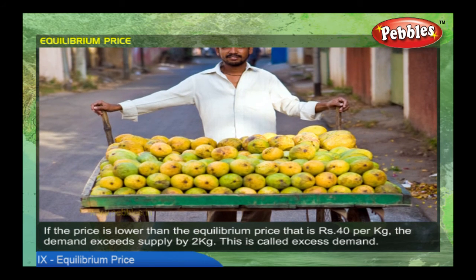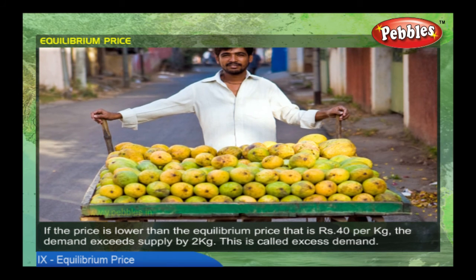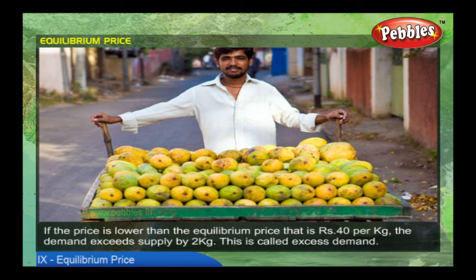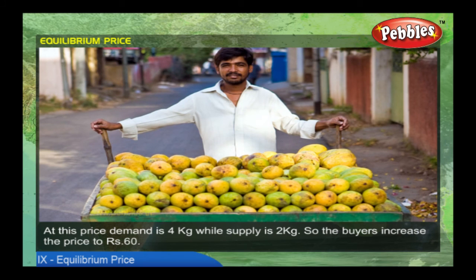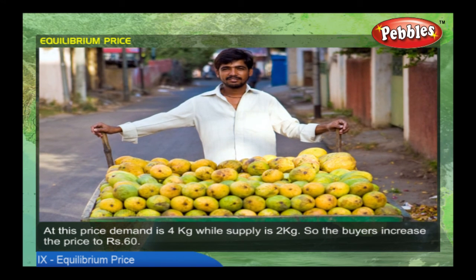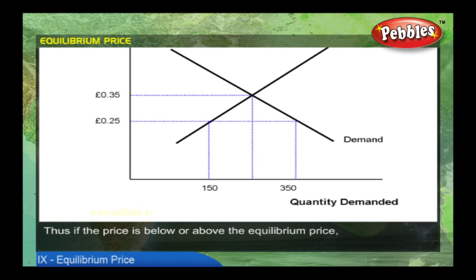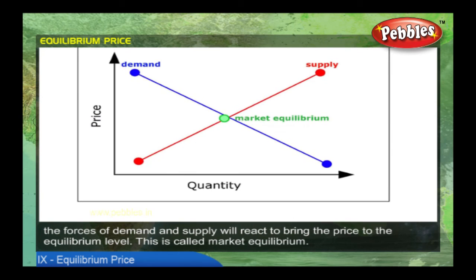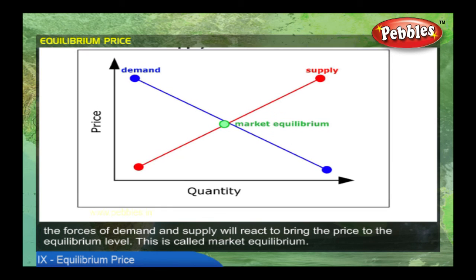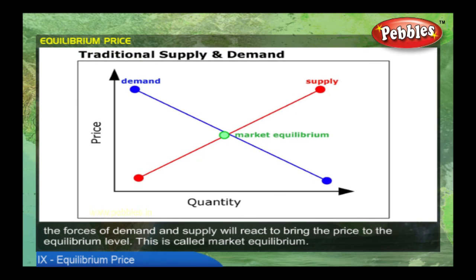If the price is lower than the equilibrium price — that is rupees 40 per kg — the demand exceeds supply by 2 kgs. This is called excess demand. At this price, demand is 4 kgs while supply is 2 kgs, so the buyers increase the price to rupees 60. Thus, if the price is below or above the equilibrium price, the forces of demand and supply will react to bring the price to the equilibrium level. This is called market equilibrium.